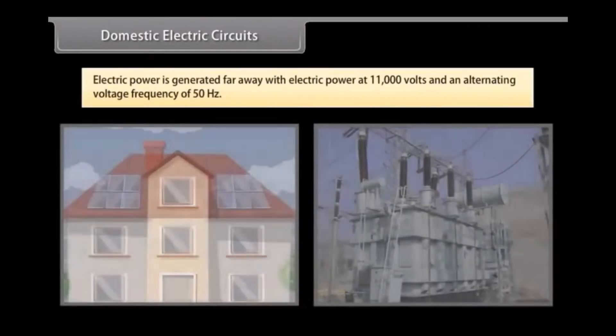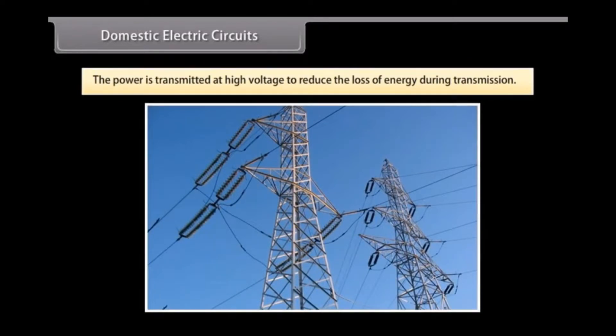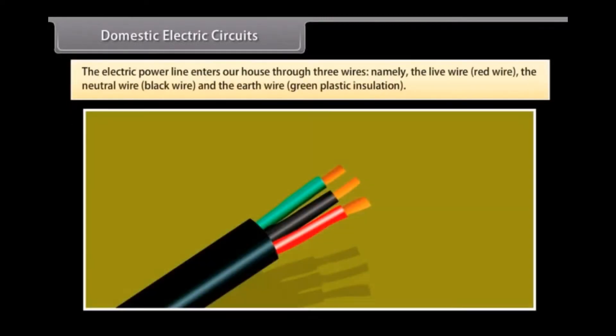Domestic Electrical Circuits. Electric power is generated far away from the places it is consumed. At the generating station, the electric power is generated at 11,000 volts with an alternating voltage frequency of 50 hertz. The power is transmitted to the places of consumption at high voltage to reduce the loss of energy during transmission. The electric power enters our house through three wires.